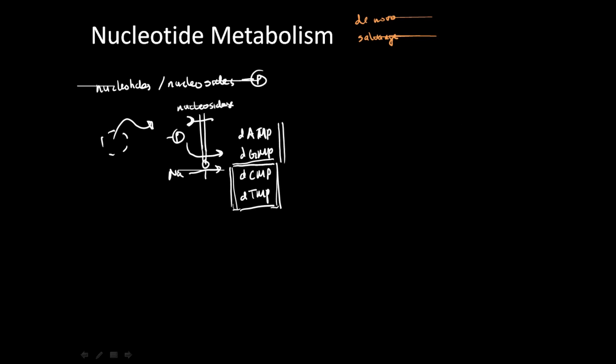So essentially what happens here is that the AMP and the GMP can be catalyzed with nucleosidase to go into adenosine and guanosine.